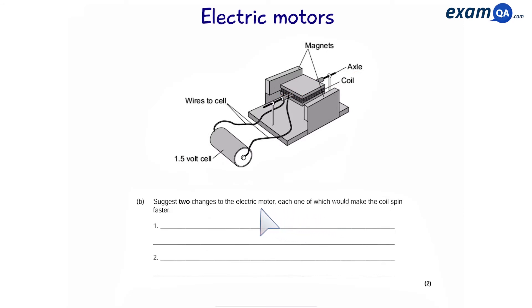Just two changes to the electric motor, each one of which would make the coil spin faster. Number one, increase the current. And number two, use a stronger magnet. Make sure you don't say bigger magnet. The key word here is stronger magnet.